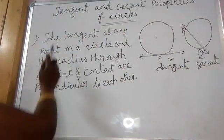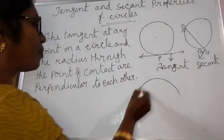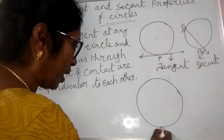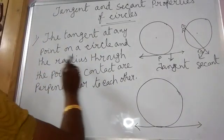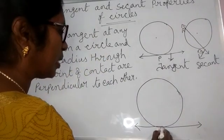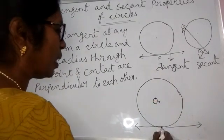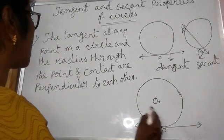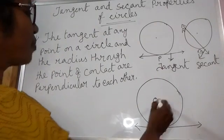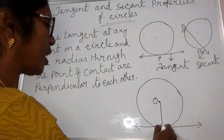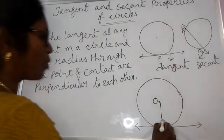The first property is: the tangent at any point on a circle and the radius through the point of contact are perpendicular to each other. Here P is the point of contact of the tangent to the circle, and O is the radius of the circle. The tangent at point P and the radius through this point of contact are perpendicular to each other — that is the property.